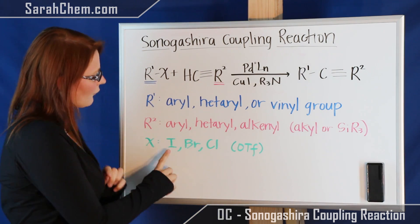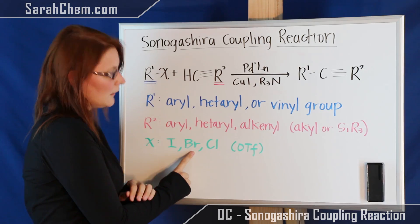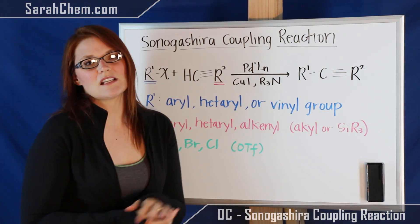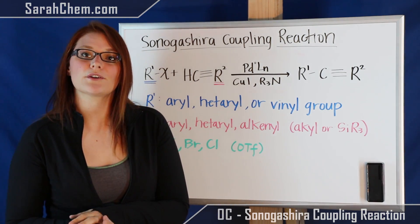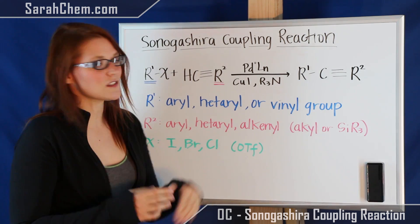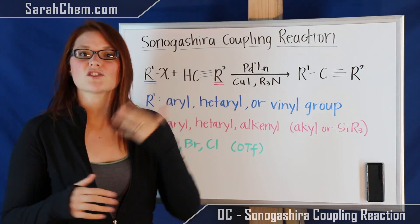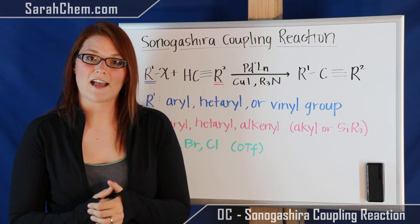The X is most often going to be iodine or bromine. It can also be chlorine. Sometimes you'll see it's also triflate or trifluoromethyl sulfonate. Now this one is not often, but it does happen. So just be aware that that is a group you can use in this reaction.